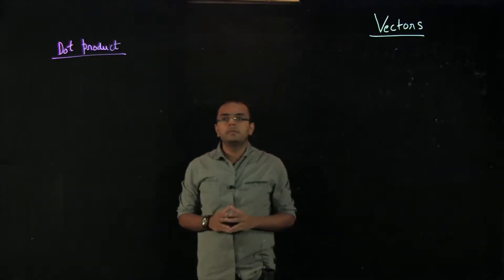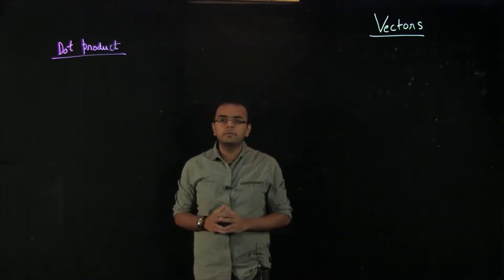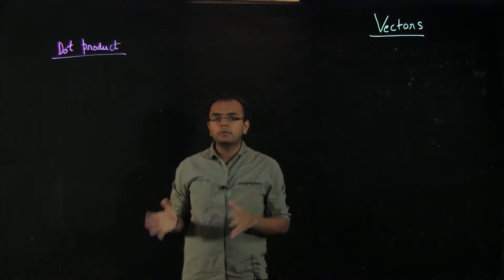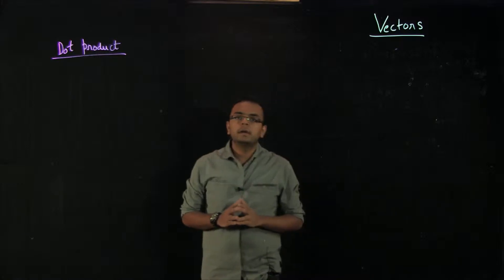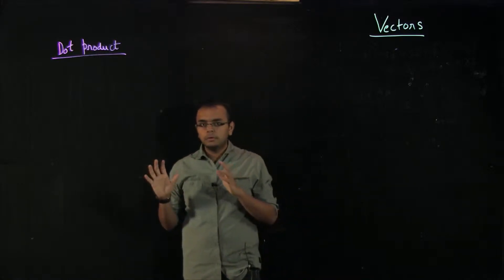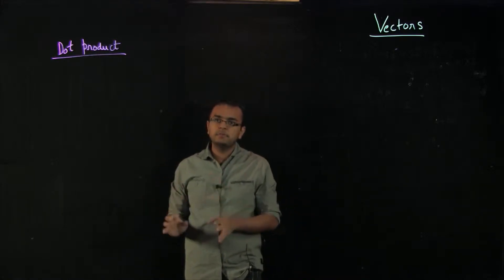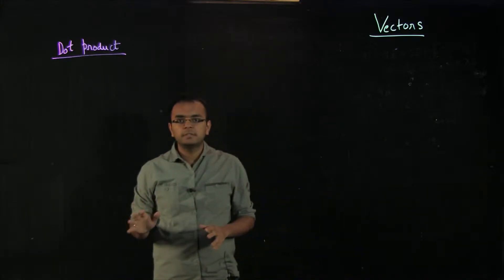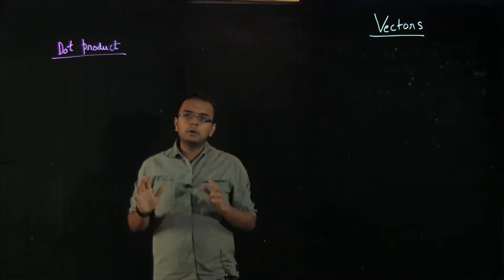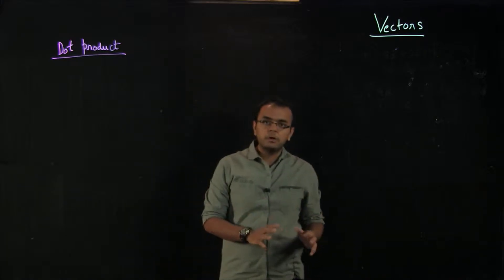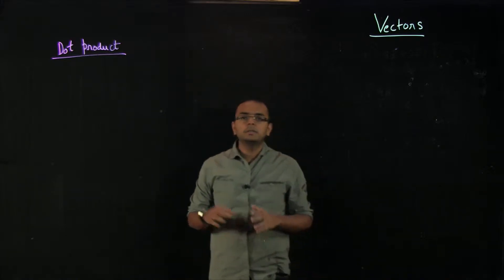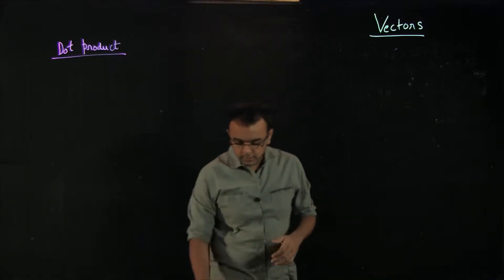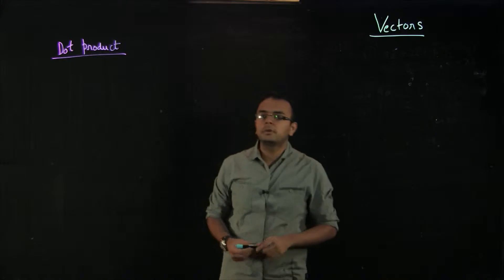Hi everyone. In this video, we will be talking about the dot product, which is a topic for vectors. I will be trying to tell you what dot product is, what is the definition of dot product, what is the physical significance of dot products, and then I will be solving a few basic examples. Dot product will be followed by cross product, and then we will take some examples in the next videos. So just for this video, we will focus on dot product.